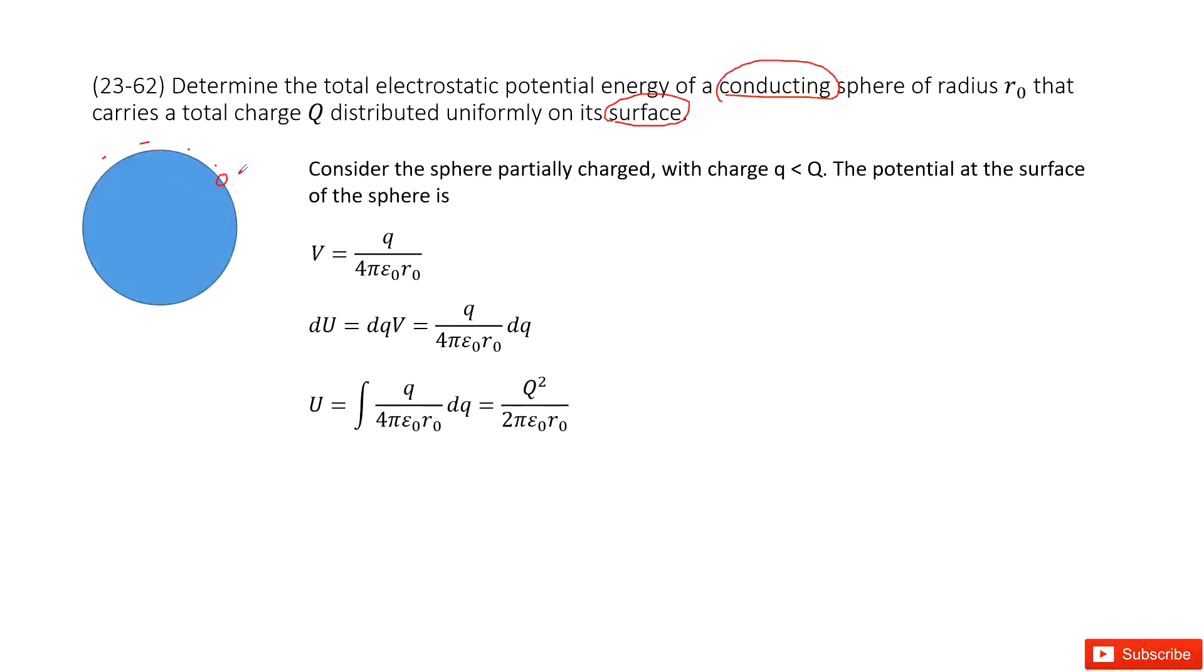And then the potential, the electric potential, can be written as V equal to Q divided by 4πε₀r₀, right?